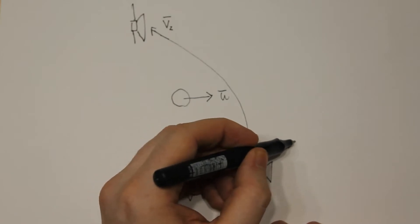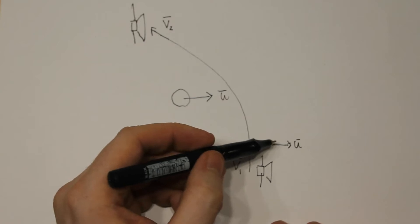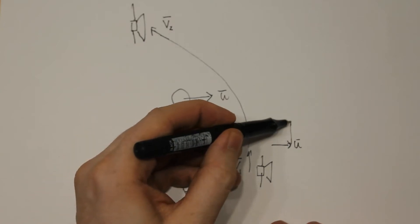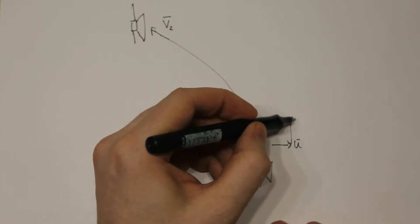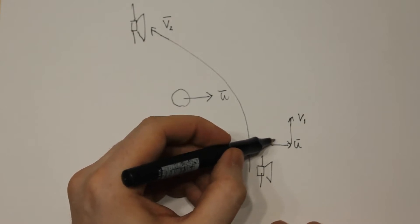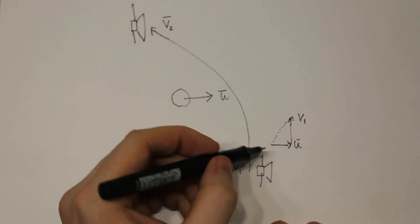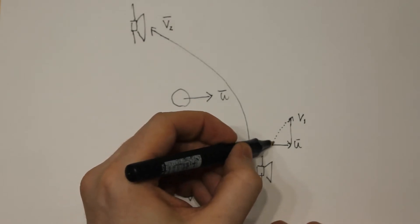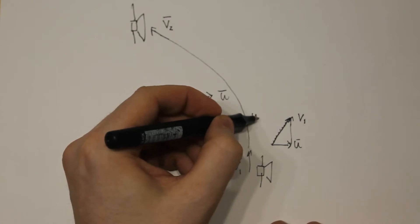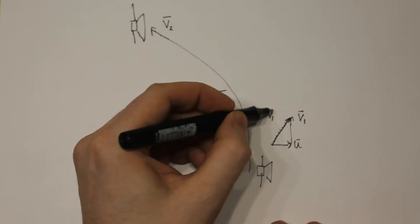So we add these together, which means that we're going to have the velocity of the planet, this is the u vector, and we're going to have the velocity of the spacecraft here, let's call this v1, which means we're going to have a total velocity vector which is u vector plus v1 vector.